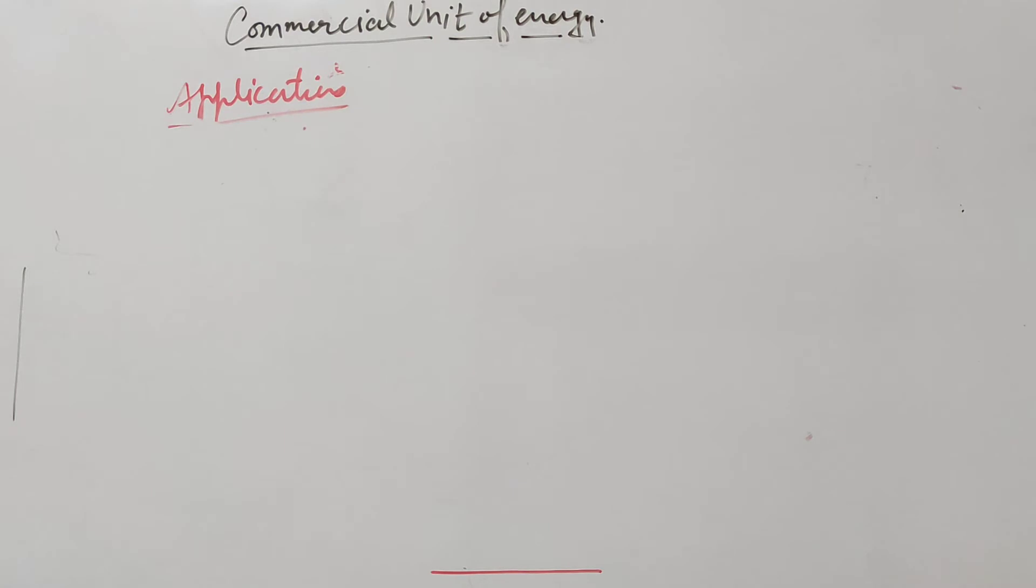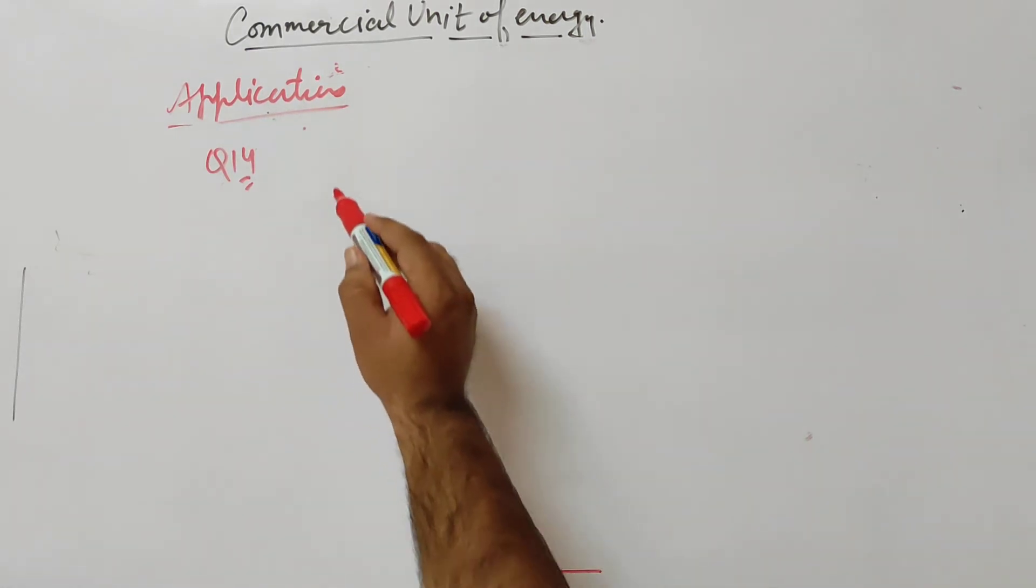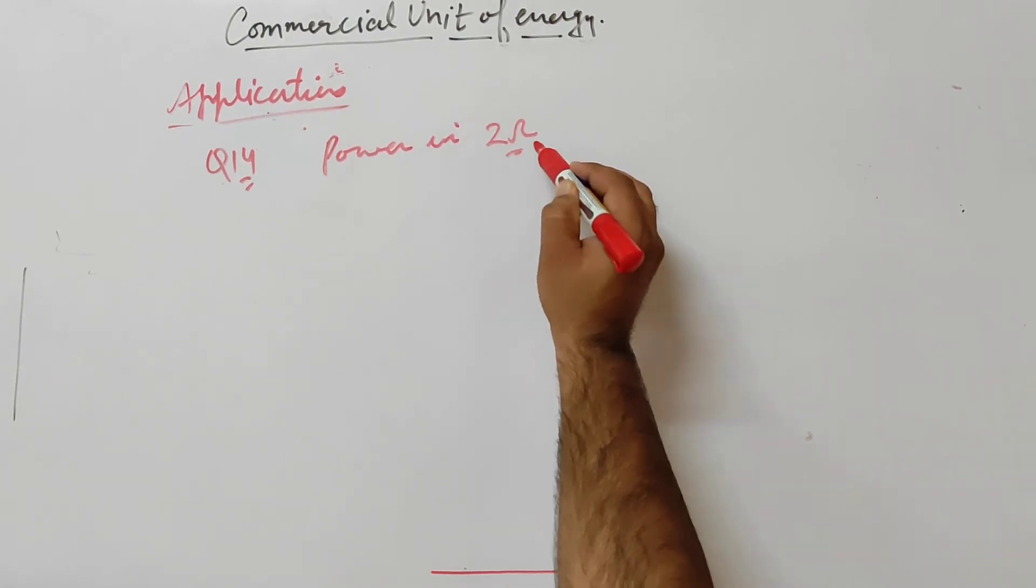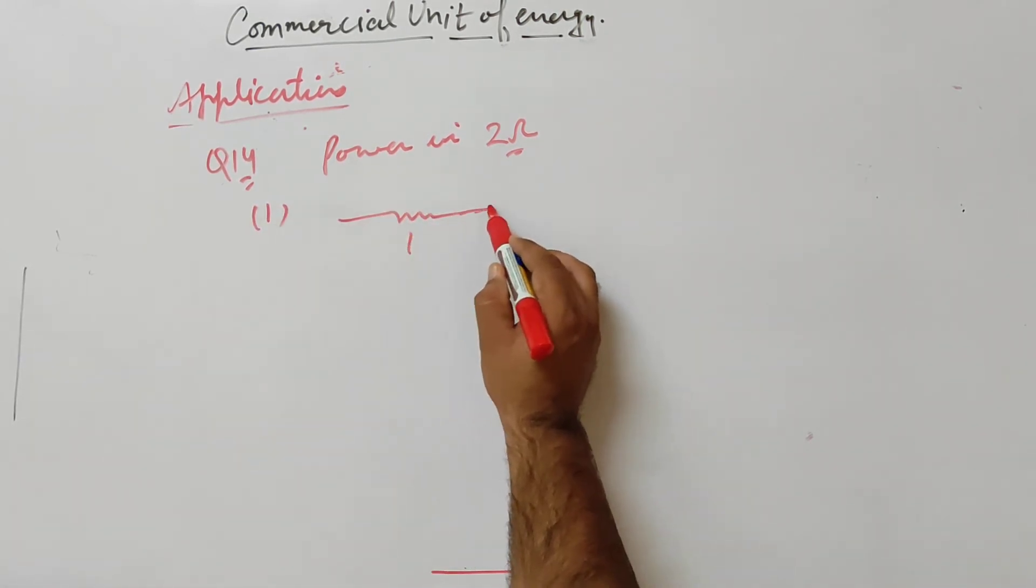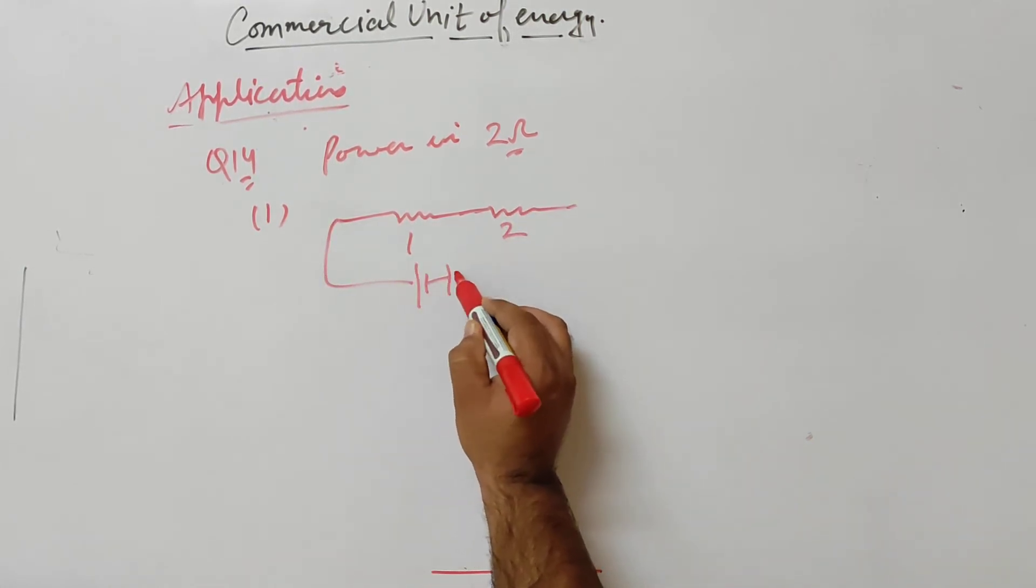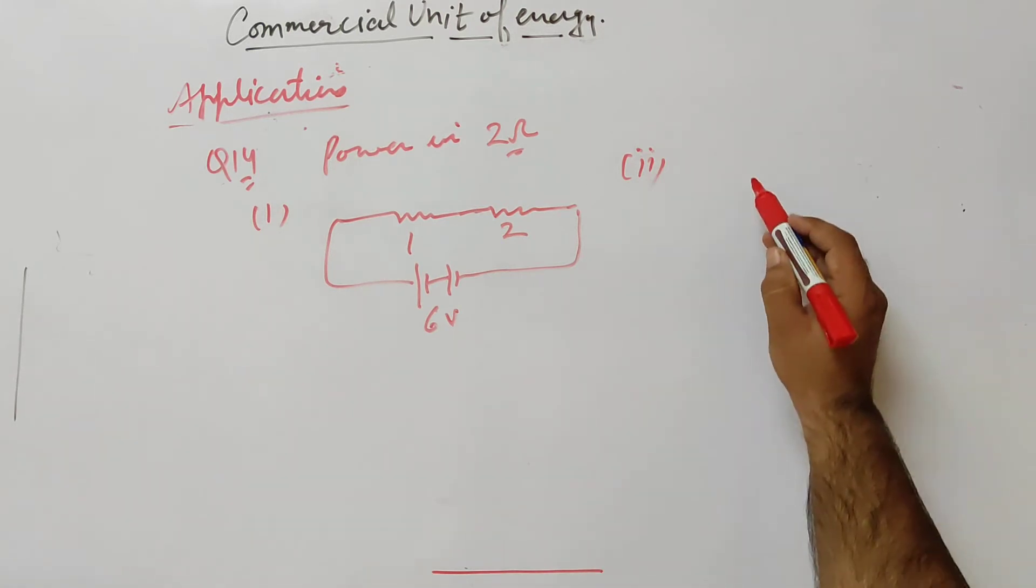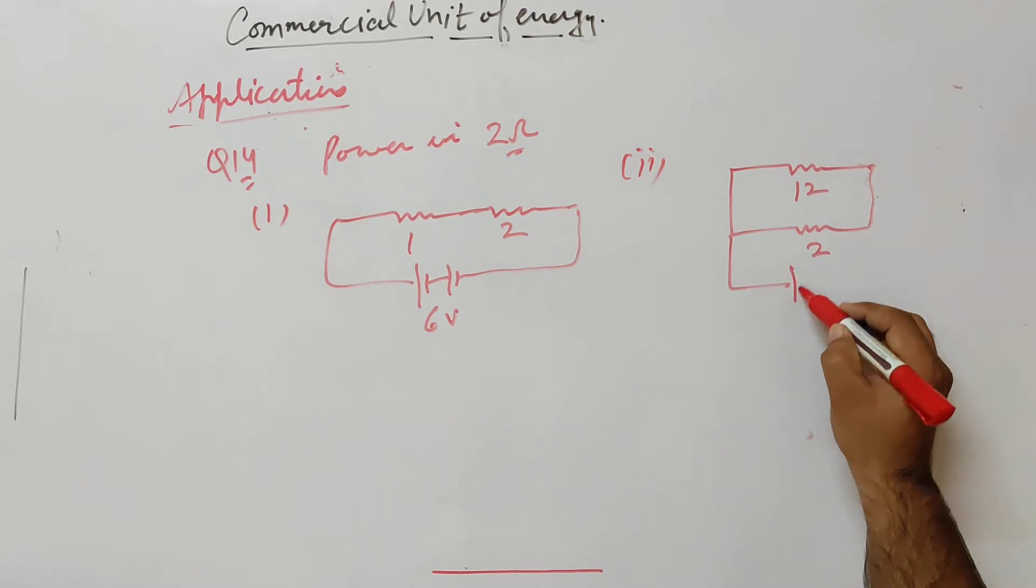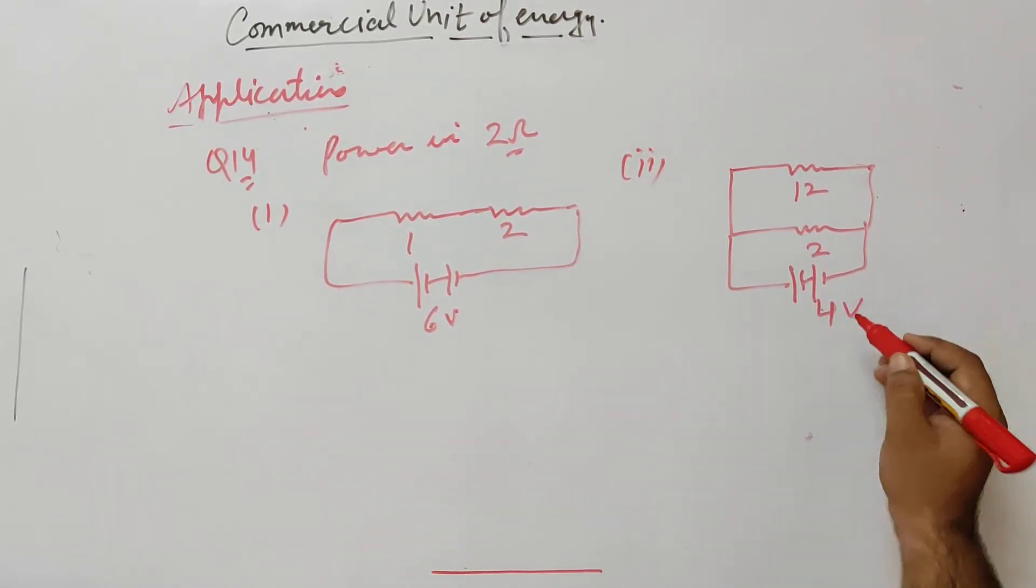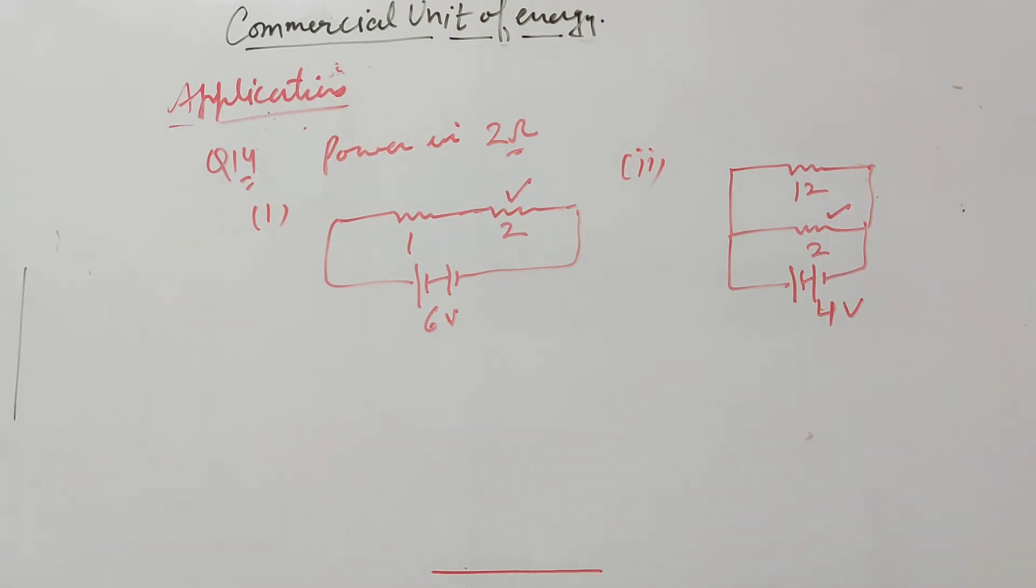Next question: we have to compare power in 2 ohm resistor. In the first circuit, 2 ohm and 2 ohm connected to 6 volt battery. Second circuit is 12 ohm parallel with 12 ohm connected to 4 volts. Compare means find the ratio.